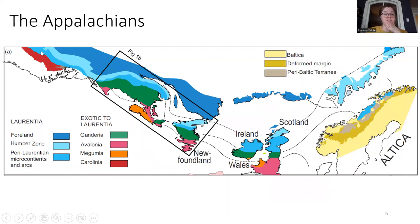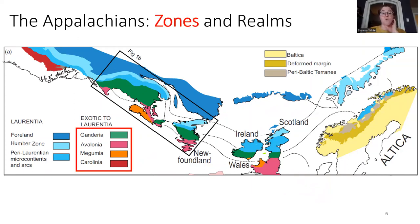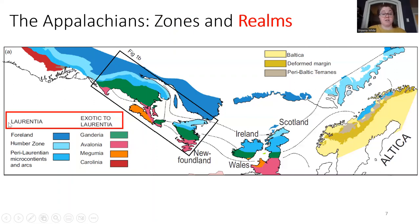The Appalachians — many of you are probably familiar with maps like this. They extend from the southern US all the way through Canada, through Newfoundland, across the Atlantic Ocean into their European counterpart, the Caledonides. These color ribbon maps are really useful for orogen-scale correlations, dividing the orogen into different zones — regions that have shared stratigraphic and tectonic history. We can also group these zones into realms: the Laurentian realm, and everything else that's exotic to Laurentia, largely zones of Gondwanan affinity in the Northern Appalachians.